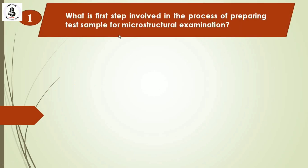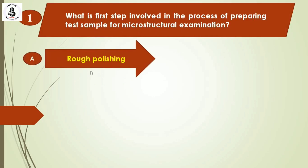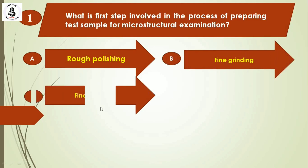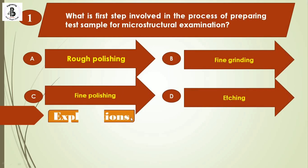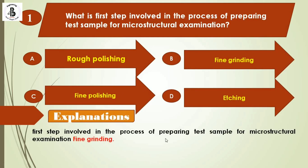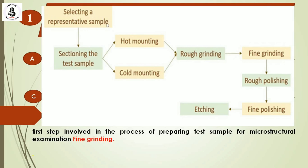Question 1: What is the first step involved in the process of preparing a test sample for microstructure examination? Option A: rough polishing. Option B: fine grinding. Option C: fine polishing. Option D: etching. The correct answer is fine grinding. The steps are: selecting a representative sample, sectioning, hot or cold mounting, rough grinding, fine grinding, rough polishing, fine polishing, and etching. So the first step is fine grinding — option B.